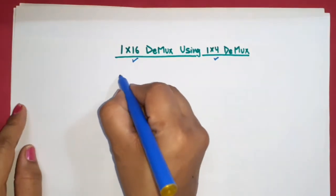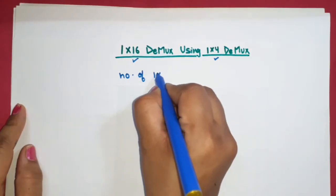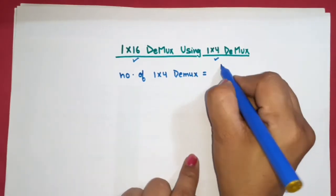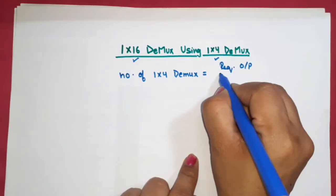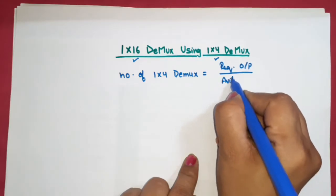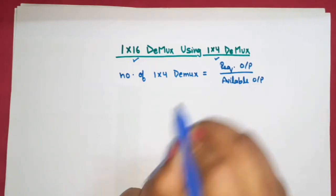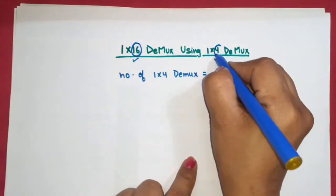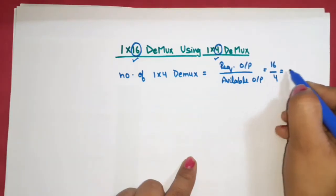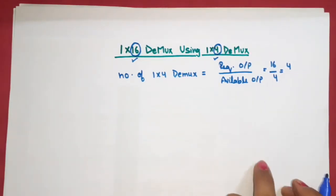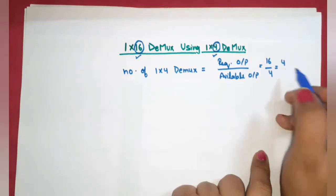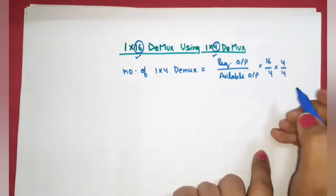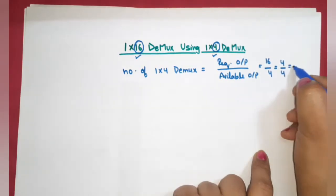We find out: number of 1-to-4 demultiplexers required = required output divided by available output. Required output is 16, available output is 4, so we get 4. Now we can again divide this by 4 — again dividing by 4 gives us 1.